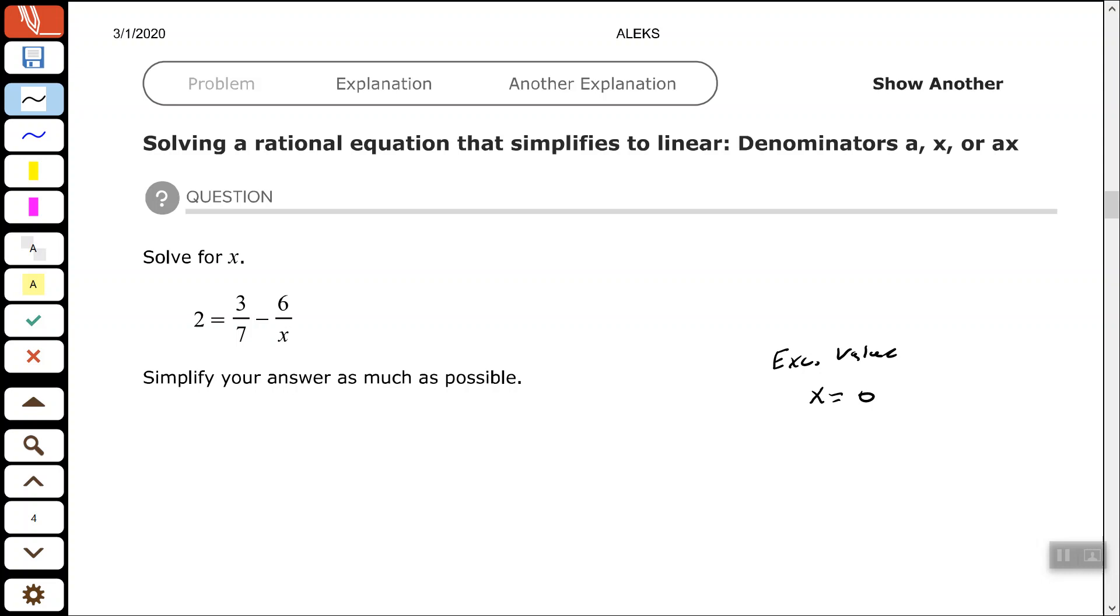So the only number that, once I solve this equation, the only thing that x cannot be equal to is 0. If it is equal to 0, then my answer is no solution. Okay, so we got that out of the way.